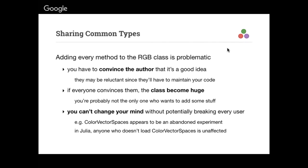For example, the ColorVectorSpaces package seems to have been an abandoned experiment. Tim Holy wrote it, thought it was a good idea, later decided nobody wanted it and abandoned the package. Anyone who wasn't using it was totally unaffected. But if you had put that code into the RGB class, you'd have no idea who's using it — because it's in the original RGB type, you have to keep it around. Anyone using RGB could potentially be using that code, so you can't delete it. Whereas if it's in a separate package, anyone not using the package is not dependent on that code.